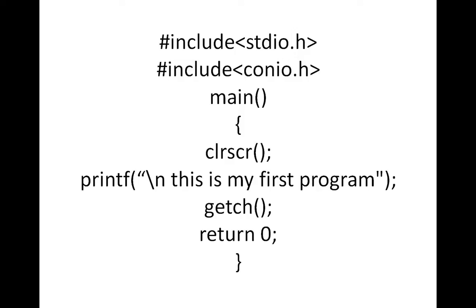Within double quotes, we write: this is my first program. Then close the bracket and semicolon. Here, this is backslash n — this is a new line character, an escape sequence. It means it will display every time on a new line only.